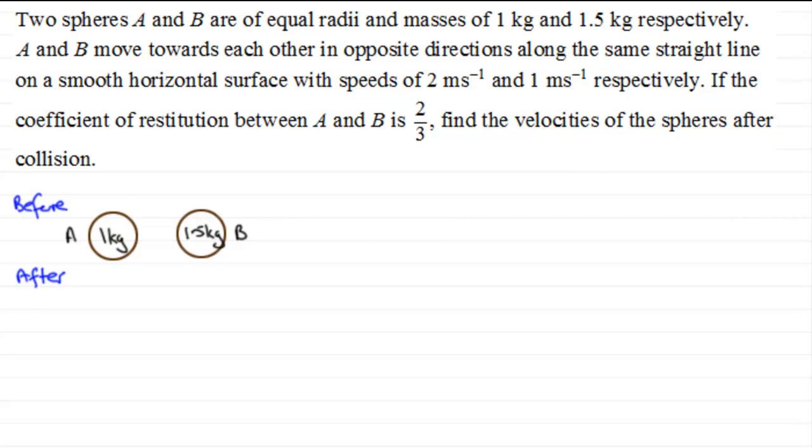So before impact, we're told that A and B move towards each other in opposite directions along the same straight line. And the speeds are 2 metres and 1 metre per second respectively. So we've got A moving at 2 metres per second towards B, which is moving towards A at 1 metre per second.